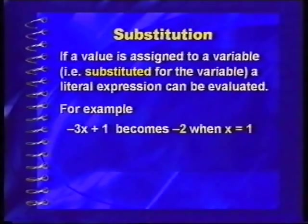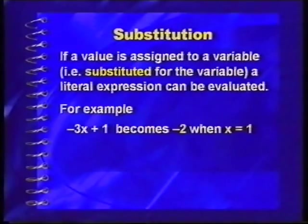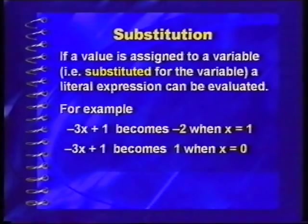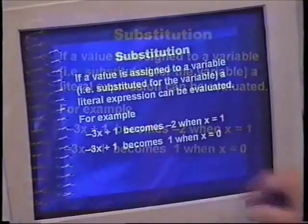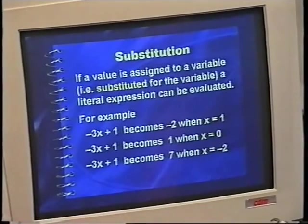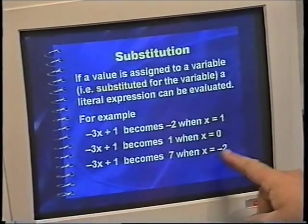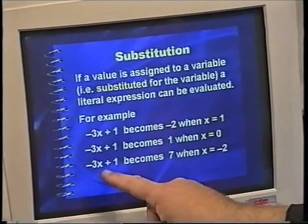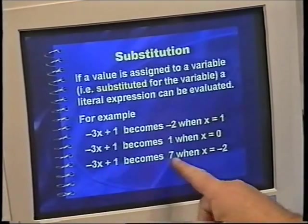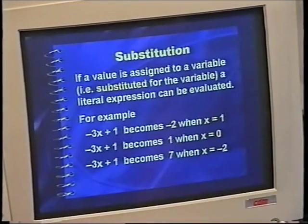We substitute the value — that means we assign a value to a variable — and so we can then evaluate the literal expression. For example, I've got minus 3x plus 1. That becomes negative 2 when x equals 1, it becomes 1 when x equals 0, and a different value when x equals negative 2. That negative 2 times negative 3 becomes positive 6, add 1, and you get 7.